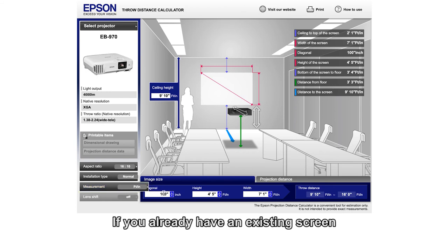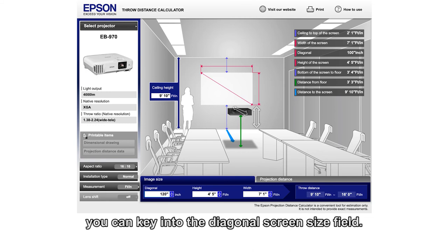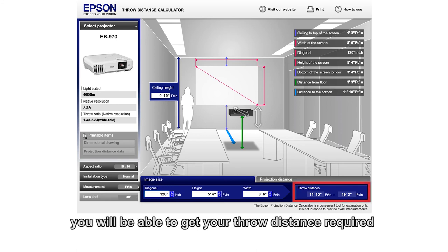If you already have an existing screen or desired screen size, you can key into the diagonal screen size field. Once you hit enter, you will be able to get your throw distance required based on the screen size you would like to achieve.